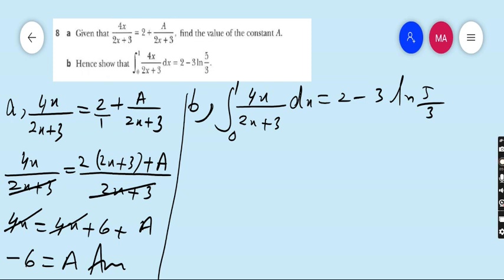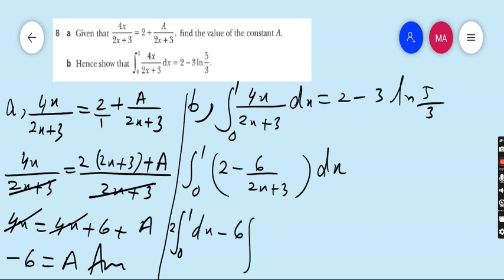Part b says hence, which means you have to take the help from the previous part. So integrate 0 to 1: we have already converted 4x upon 2x plus 3 in part a to 2 plus A, and A is minus 6, so 2 minus 6 upon 2x plus 3 dx. Apply the sign of integration in each and every term. 2 goes outside, 6 goes outside. 1 upon 2x plus 3 dx.